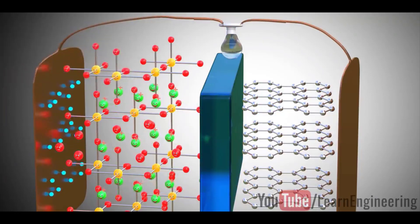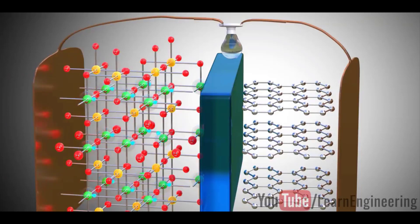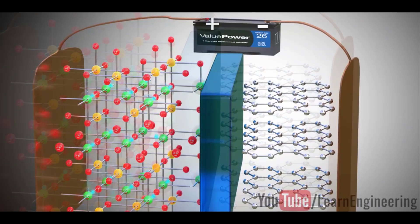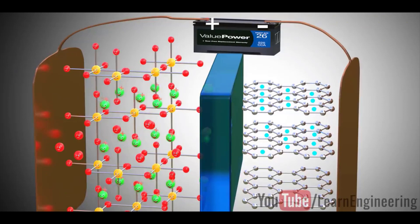Once all the electrons and lithium ions reach the metal oxide, the battery is fully discharged. If we connect this to the power source again, the battery will get charged again. This process will be repeated.